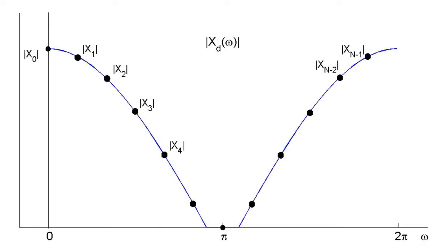We represent the DTFT with a set of N samples. These samples are evenly spaced starting at 0 and ending just to the left of 2 pi, such that the frequency spacing between the last sample and 2 pi is the same as every other sample. We number these samples from 0 to N minus 1.